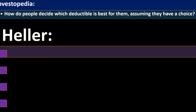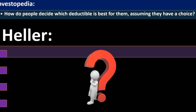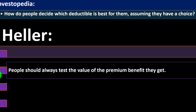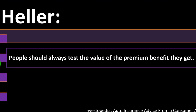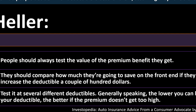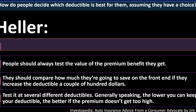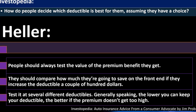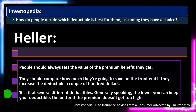Investopedia asking: how do people decide which deductible is best for them, assuming they have a choice? You have to decide whether you want insurance on your car at all — that depends on the size, quality, and how costly the car would be to replace. The expert says people should test the value of the premium benefits they get, comparing how much they'd save if they increase the deductible a couple hundred dollars. Test it at several different deductibles. Generally, the lower you can keep your deductible the better, if the premium doesn't get too high — you'd like a low deductible and a low premium, but those two things vary, so you're trying to find that sweet spot.